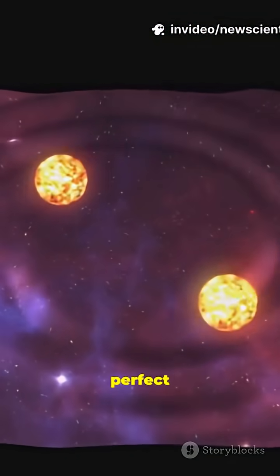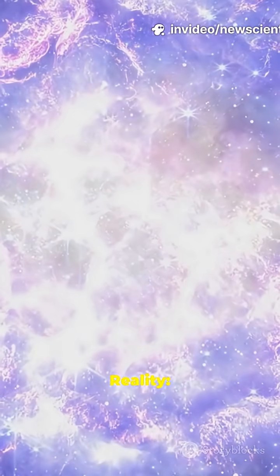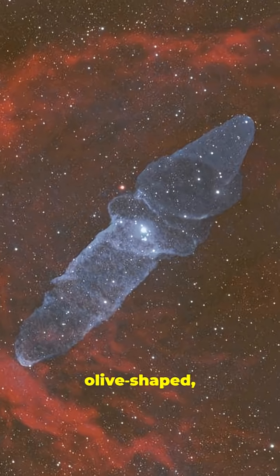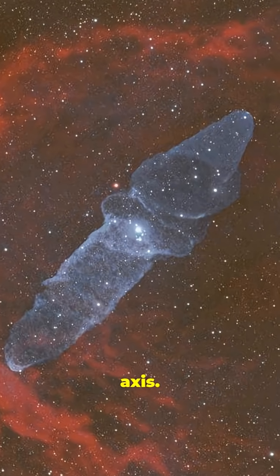Myth: Supernovas are perfect spheres. Reality: This blast is stretched and off-kilter. Observers call it olive-shaped, flattened along one axis. From the very start, the explosion is clearly asymmetric.